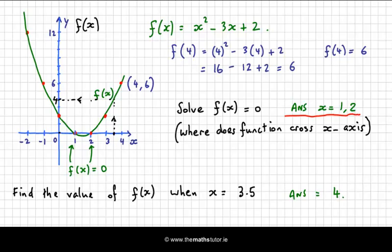We might also be asked to find the values of x for which f(x) is equal to, let's say, 3. Now, we saw earlier on when f(x) = 0 was when the y-coordinate is 0. So when f(x) = 3, it's when the y-coordinate is 3. Well, that's here.